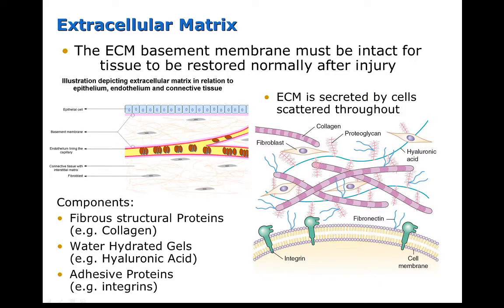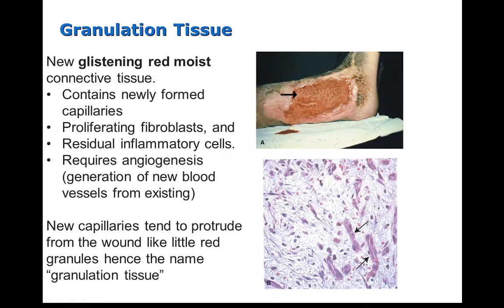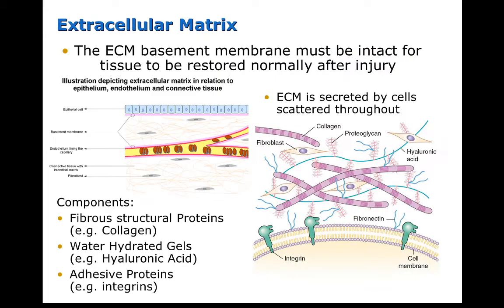The extracellular matrix occurs in two basic forms: the basement membrane and the interstitial matrix. The extracellular matrix basement membrane forms the scaffolding for tissue repair, so it must be intact for tissue to be normally restored after injury.